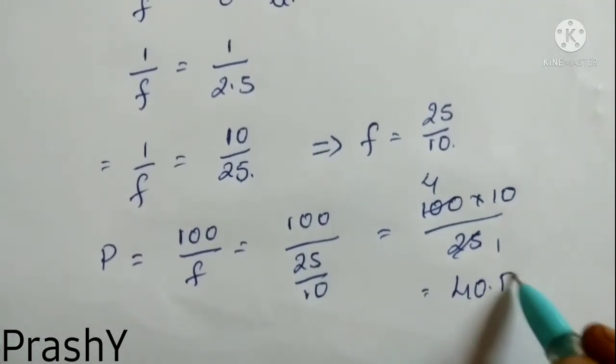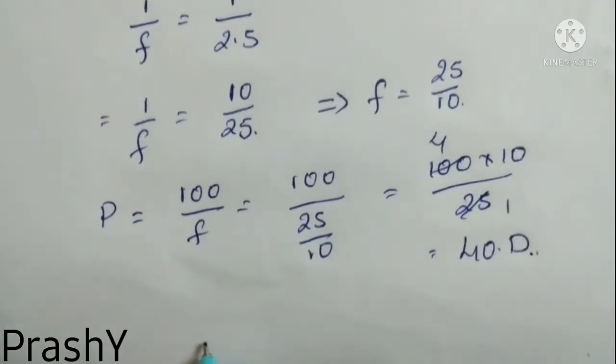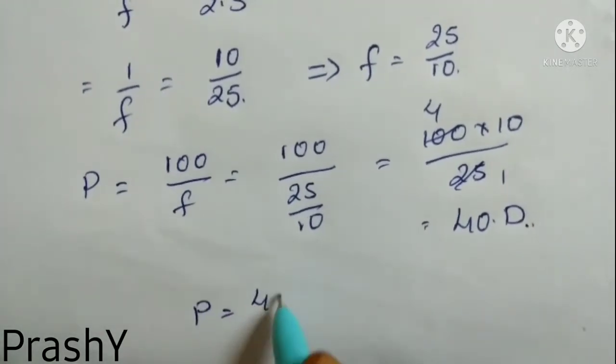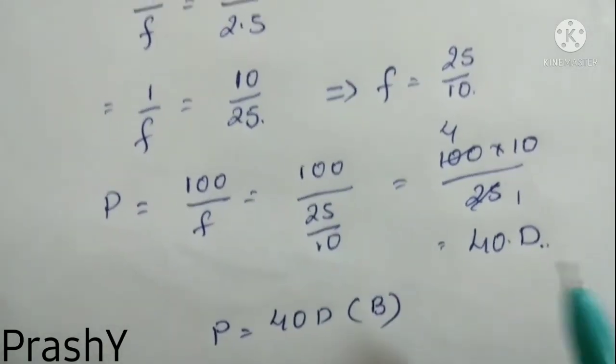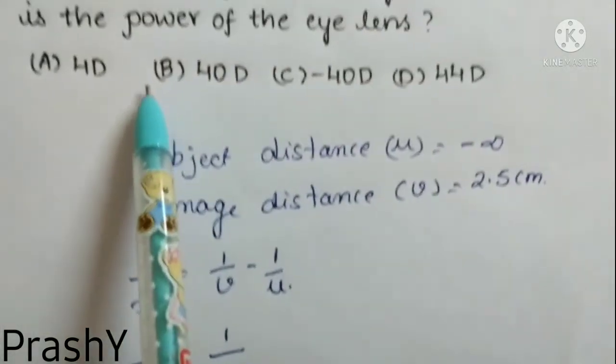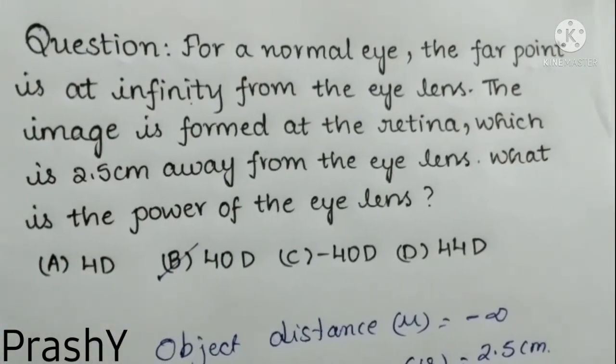Power of the lens units is diopter D. So finally we got power to be 40D. So our option is option B, that is 40D.